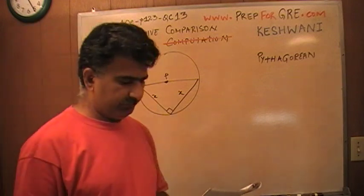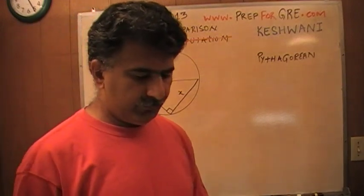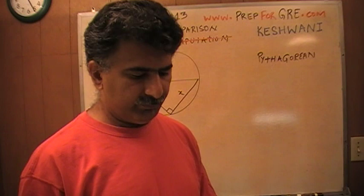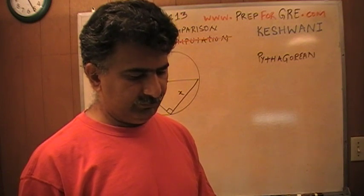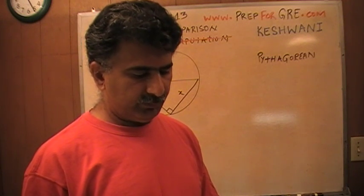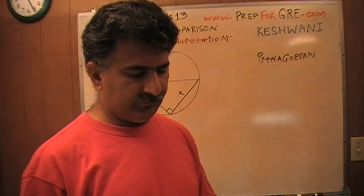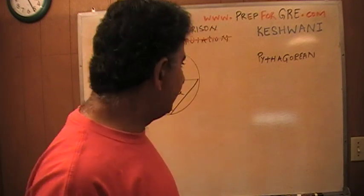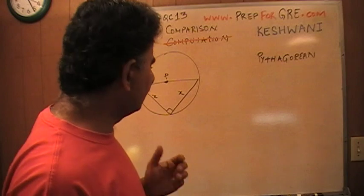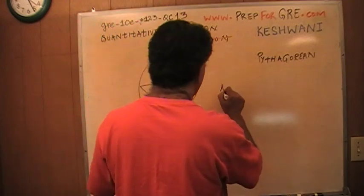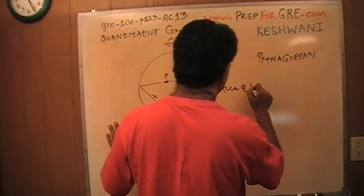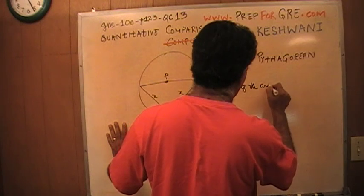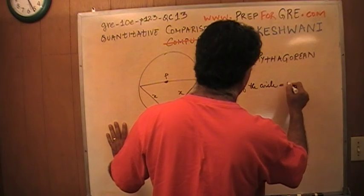What is the question asking? The area of the circular region with center P is 16π. So we are told that the area of the circle is 16π.